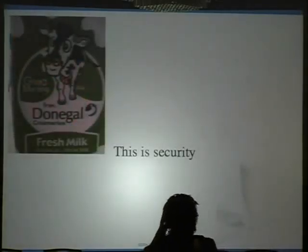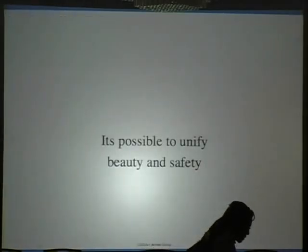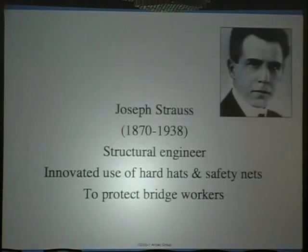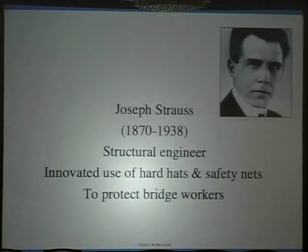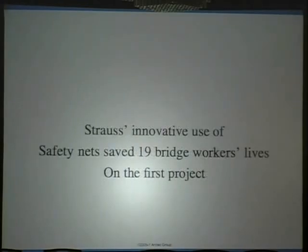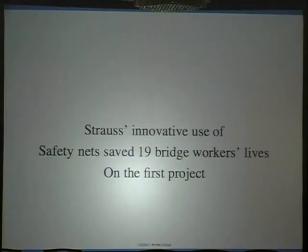Security is really boring and homogenous, so it's hard to unify these things — but it has been done at least once before. It was done by a guy named Joseph Strauss, a structural engineer. He had a safety innovation: hard hats and safety nets on bridges. Hard hats protect bridge workers' heads; safety nets catch people who fall off the bridge instead of falling into the ocean and dying. The very first time he used his safety innovation, it saved the lives of 19 bridge workers. The Golden Gate Bridge was the first time hard hats and safety nets were used in bridge construction.